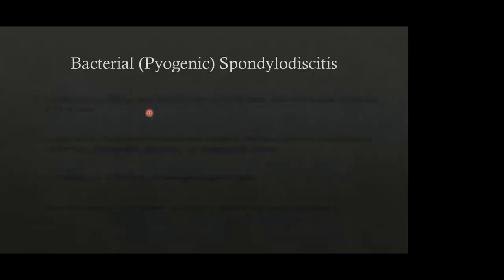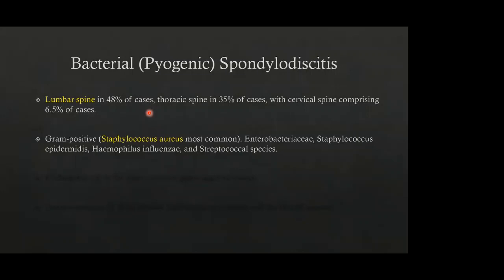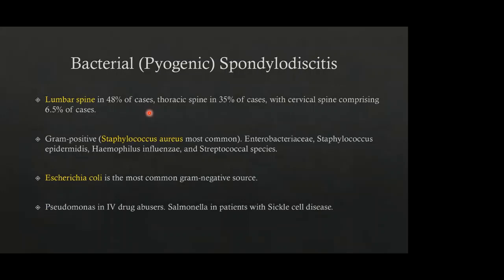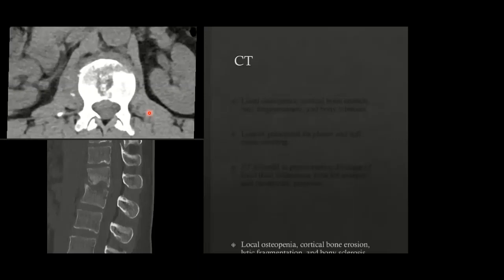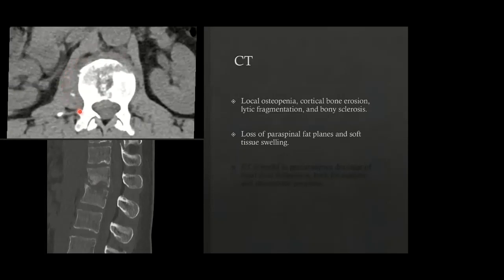Pyogenic spondylodiscitis: the lumbar spine is most commonly affected, followed by the thoracic spine. Gram-positive cocci — Staphylococcus aureus — are most common. E. coli is the most common gram-negative source. Pseudomonas can be seen in IV drug users and Salmonella in patients with sickle cell disease. CT findings include local osteopenia, cortical bone erosion with lytic fragmentation, reactive bony sclerosis, destruction of the intervertebral disc space, and when adjacent soft tissues are involved, loss of fat planes and soft tissue swelling. CT is useful for guiding percutaneous drainage of fluid collections or biopsy for diagnostic and therapeutic purposes.